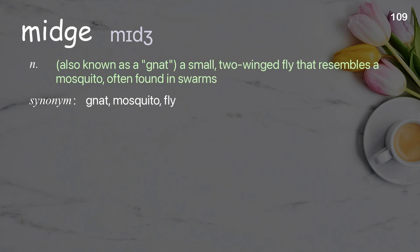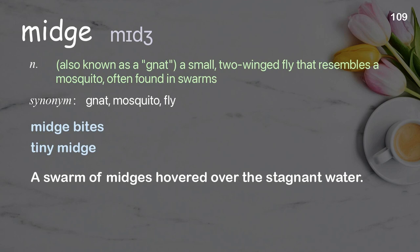Midge: Also known as a gnat, a small, two-winged fly that resembles a mosquito, often found in swarms. Examples: midge bites, tiny midge. A swarm of midges hovered over the stagnant water.